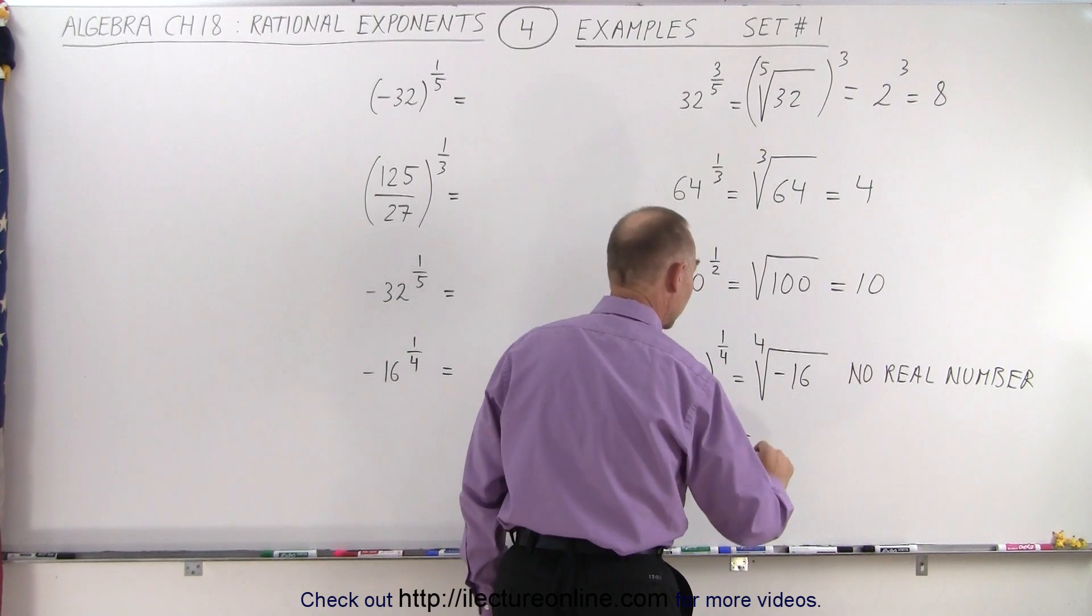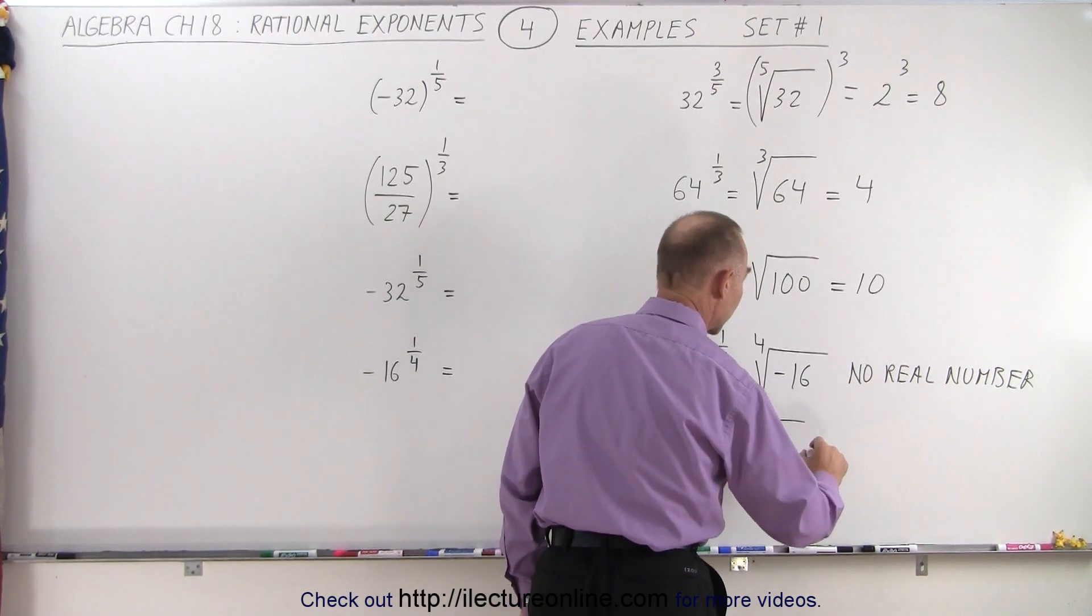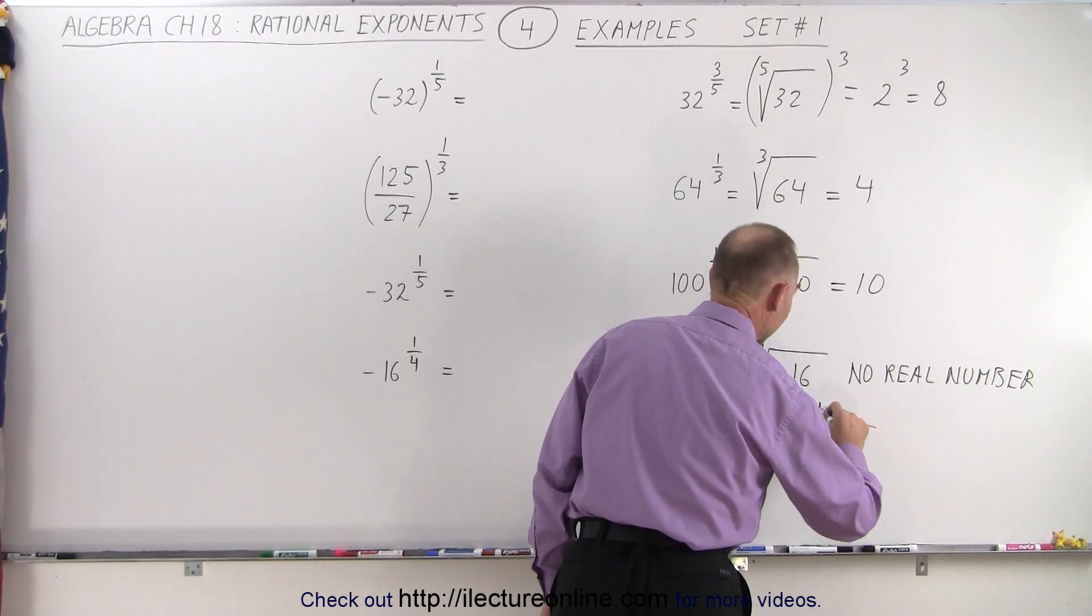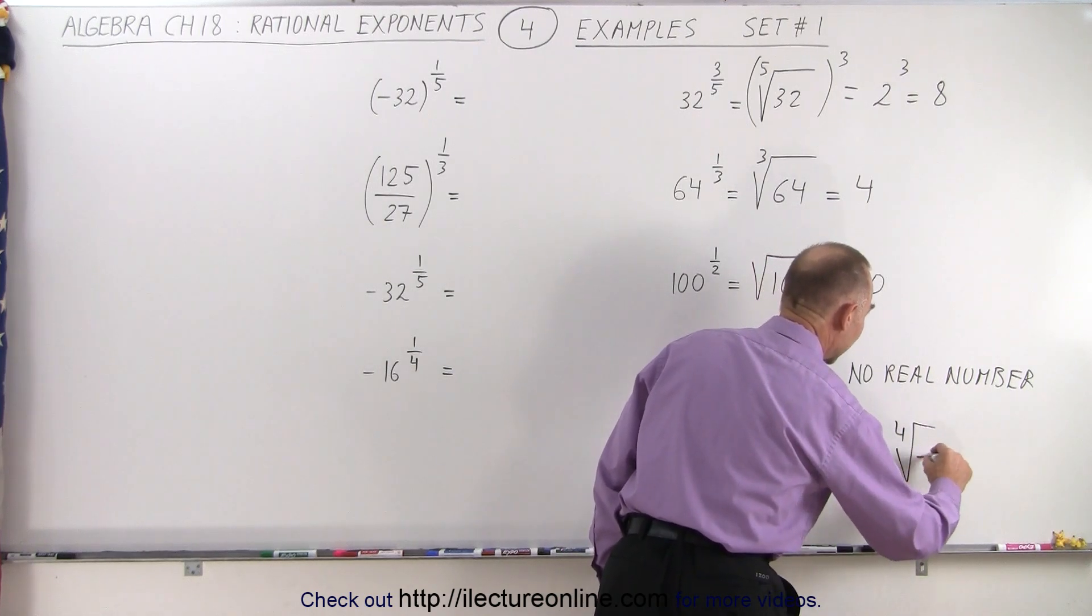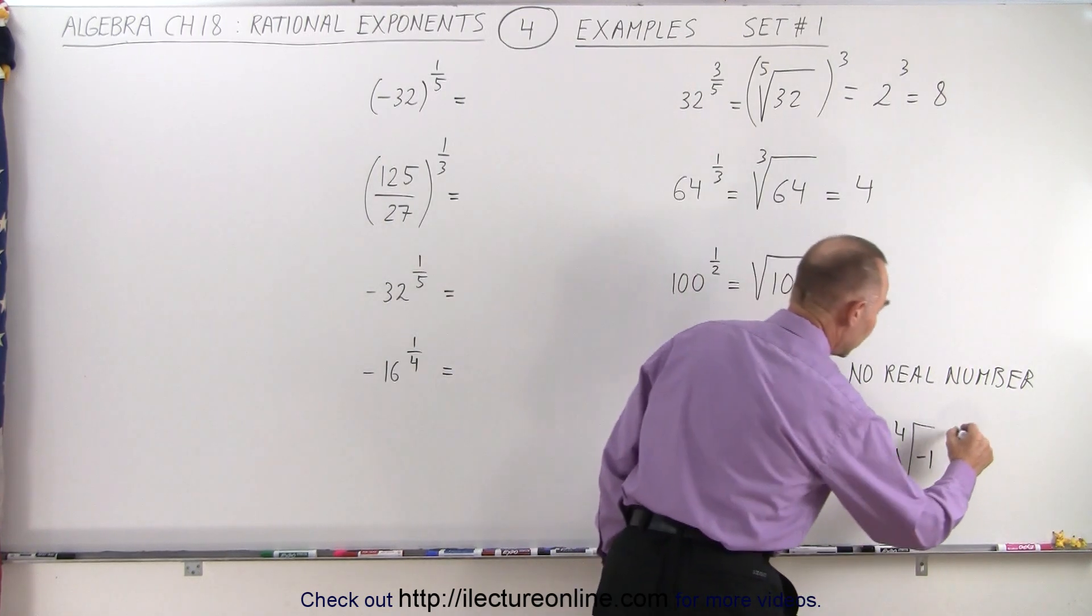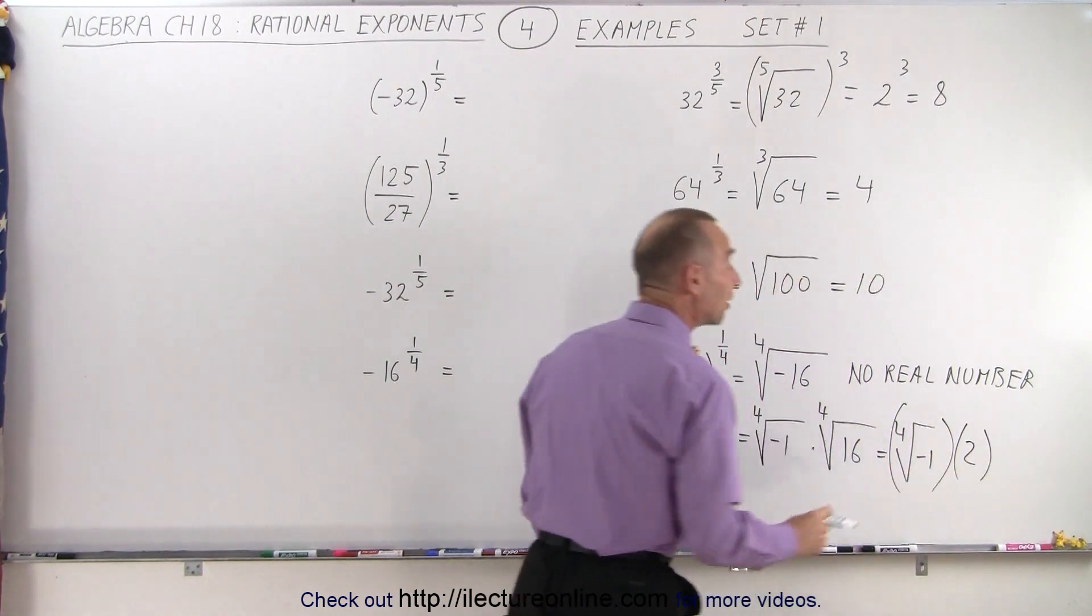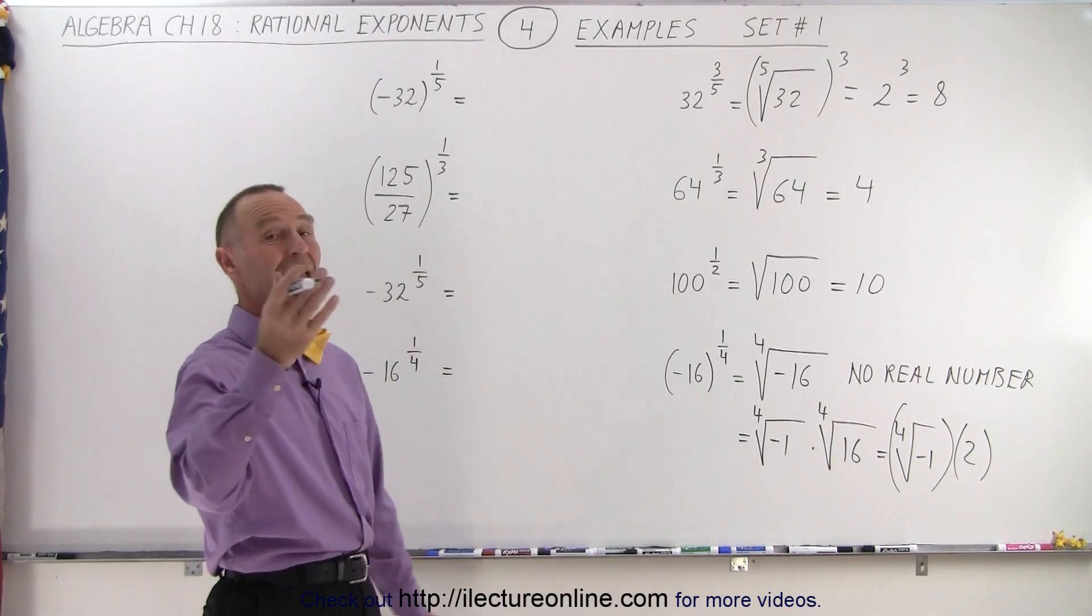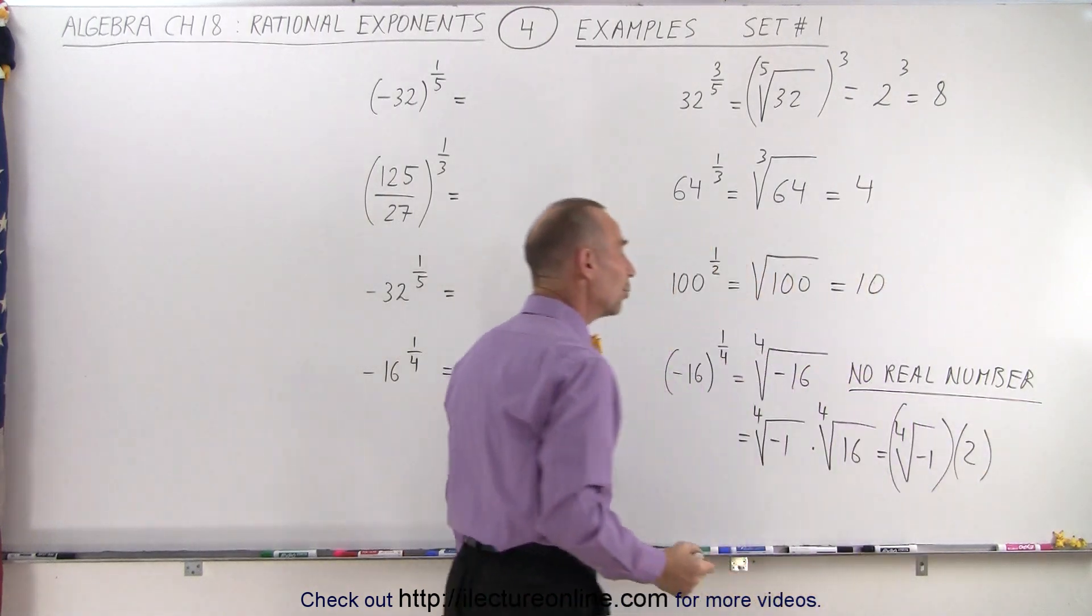We've seen in the past that this can be written as the fourth root of negative 1 times the fourth root of a positive 16. And so this would be equal to the fourth root of negative 1 times the fourth root of 16, which is equal to 2. Now the question is, can we take the fourth root of negative 1? And the answer is no, we can't. So we're still stuck with saying the answer is not a real number.